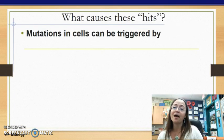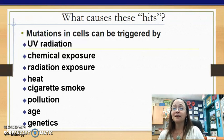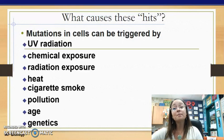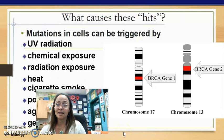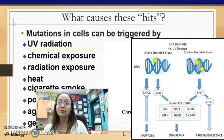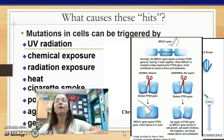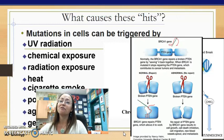Mutations can be triggered by UV radiation, chemical exposure, heat, cigarette smoke, pollution, age, or genetics. Genetics is responsible for only about 10–15% of cancers. A commonly studied example is breast cancer and the BRCA genes — BRCA1 and BRCA2 on different chromosomes. These genes are used to repair certain proteins, so if you have a mutation in these genes, proteins in the cell cycle are not getting repaired, and therefore you'll have abnormal cells multiplying.